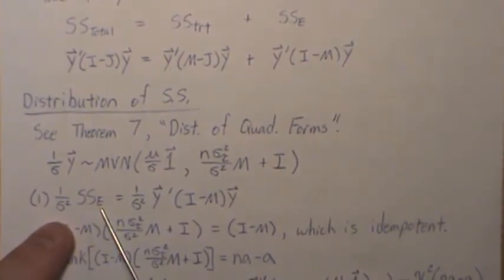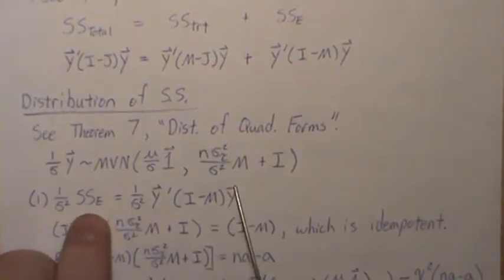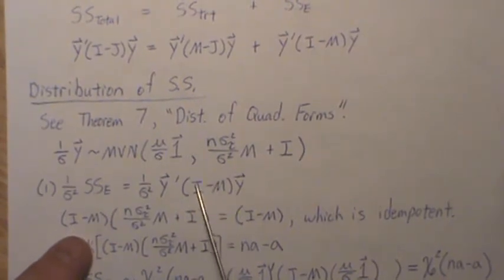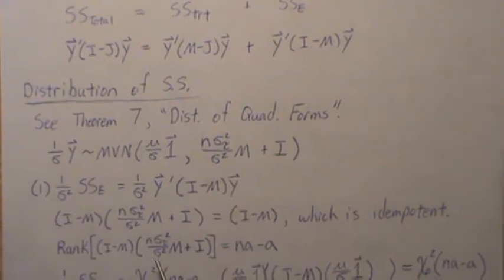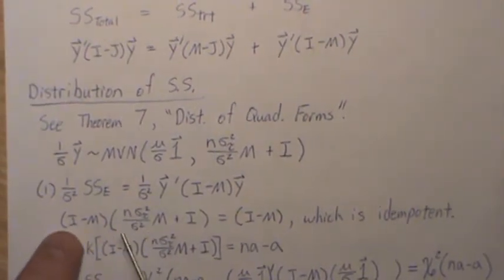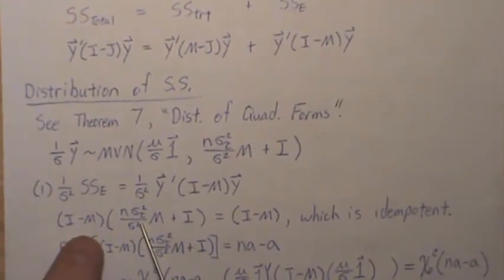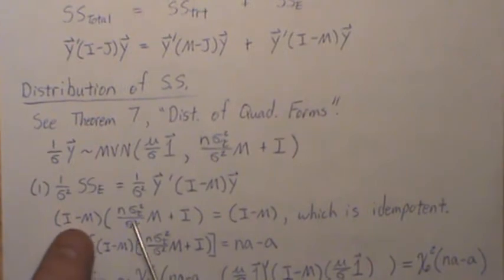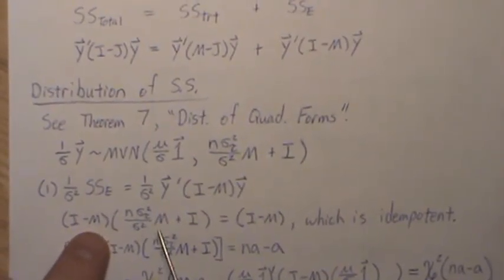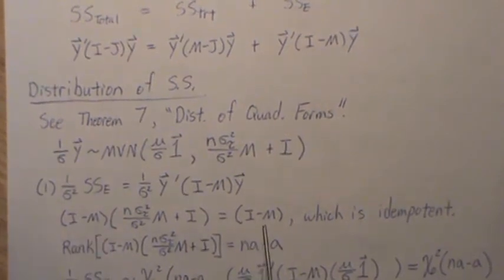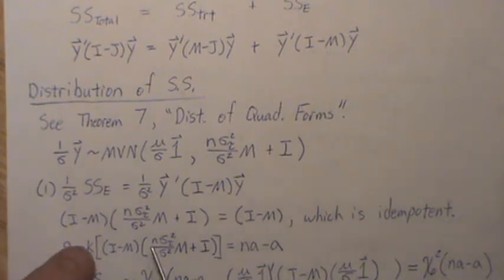The sum of squares error — sometimes called sum of squares residual — is written in matrix form, and one thing we must show is that this matrix times the variance-covariance matrix is idempotent. Doing this multiplication piecemeal: M times the relevant term gives M back (idempotent), and then the terms cancel, leaving I minus M. We've shown in previous videos that I minus M is a perpendicular projection matrix, so it is idempotent and symmetric.